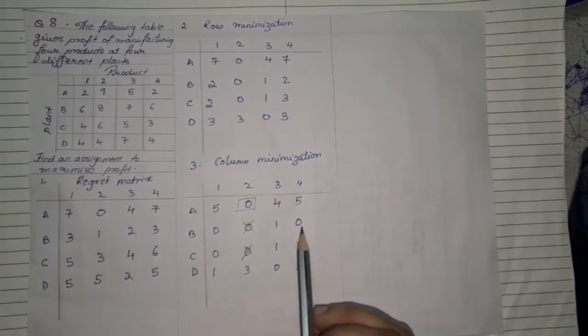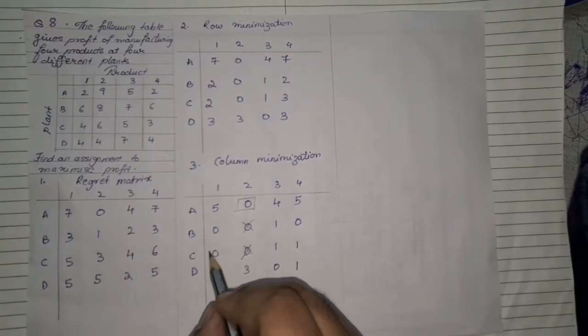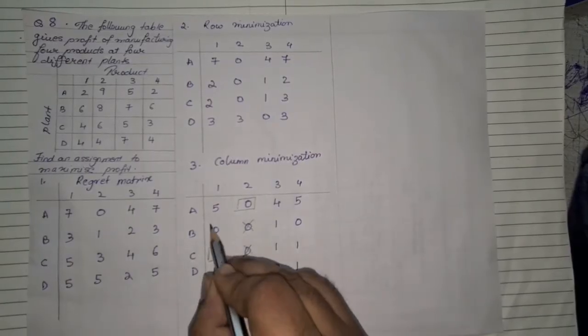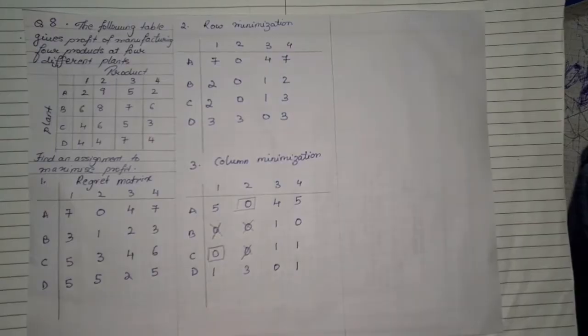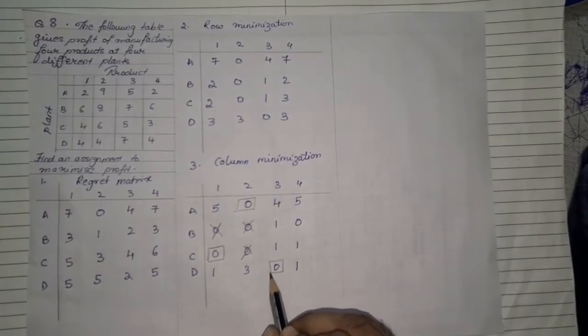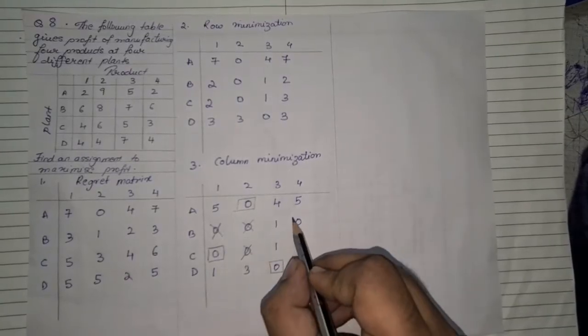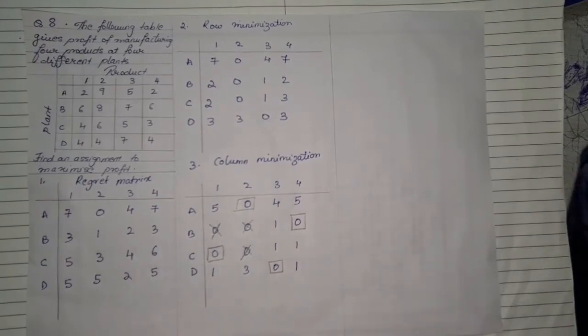Subsequently all of the zero get crossed out. In the fourth row there is only one zero so we mark it out. All the rows are done we go column by first column everything is done, second done, third, fourth one there's only one zero. We mark that particular zero.